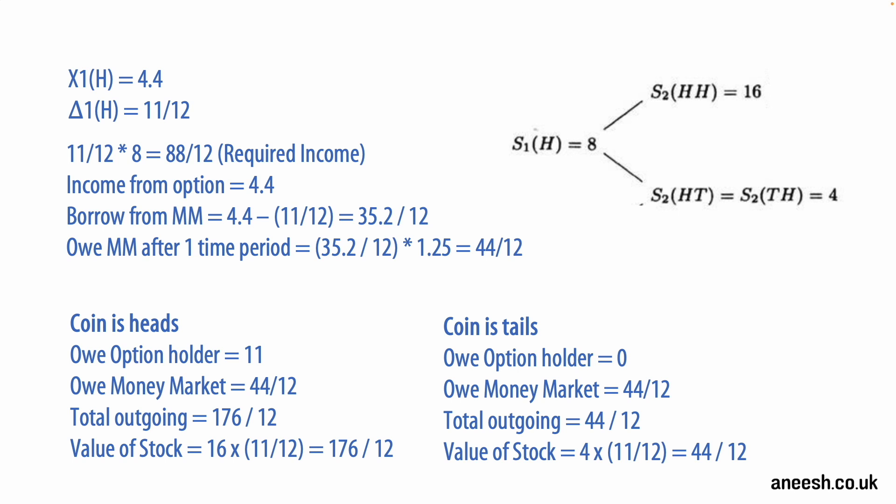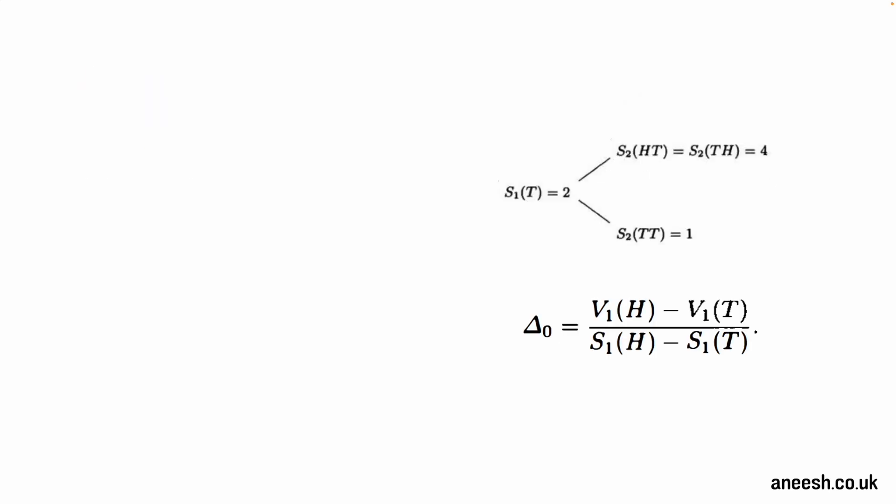If however the first coin flip is actually tails and the stock price starts at 2, then the stock value at time 2 can either be 4 or it can be 1. Using our delta hedging formula we can now calculate the delta required to hedge this exposure. The values we'll plug into our formula for V2(TH) and V2(TT) are both 0 as the option will have no value to the holder at time 2, and for S1(TH) and S1(TT) these are 4 and 1. Therefore the delta at time 1 given a first coin flip of tails is 0 over 3 and that's going to be equal to 0.